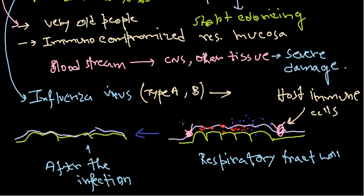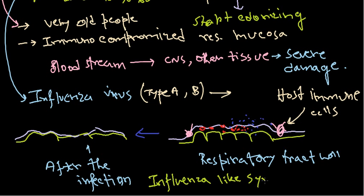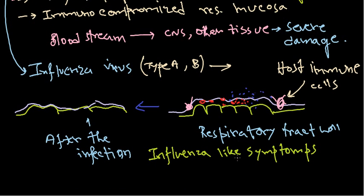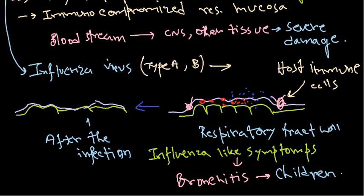There is also parainfluenza virus, whose activity is very similar to influenza virus. However, the symptoms it causes are called influenza-like symptoms rather than true influenza. Parainfluenza virus also causes pneumonia and coughing, and can cause bronchitis as well. It is predominantly seen in children rather than adults.